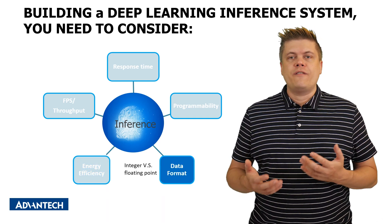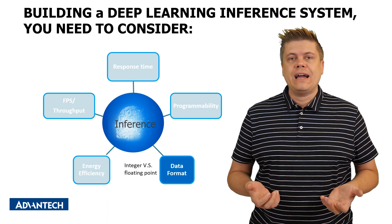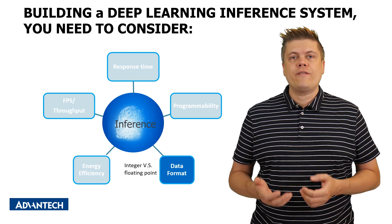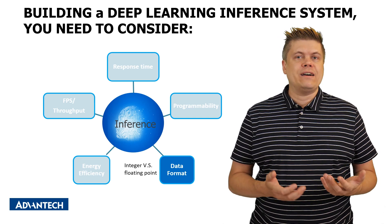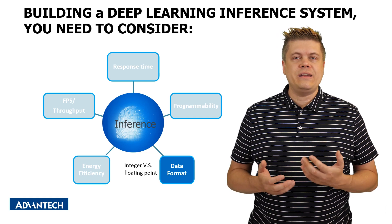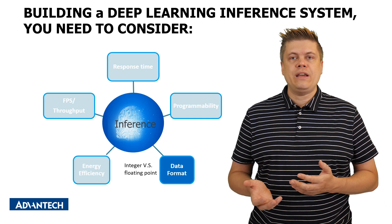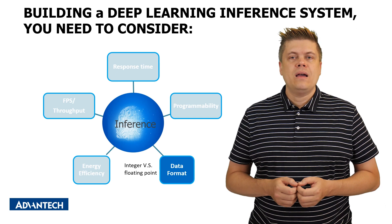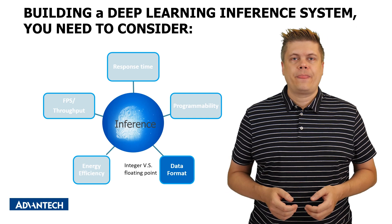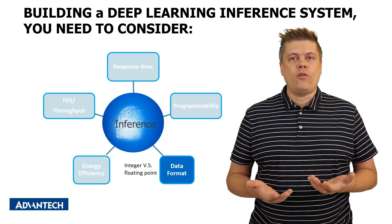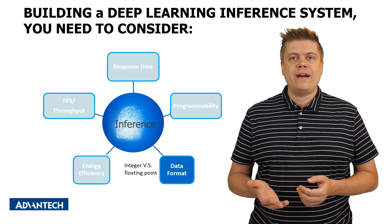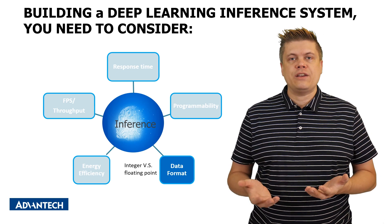Data format is also a factor to consider. There are two types: integer and floating point. In general, floating point format describes data with a higher detail level and thus higher precision. However, it is also due to this higher detail level that floating point computation takes more time. Put simply, it's a trade-off between precision and response time. Sometimes using integer data formatting would not lose much precision, so users can try to find a balance according to their application requirements.